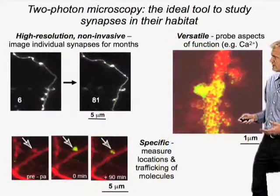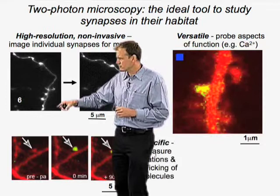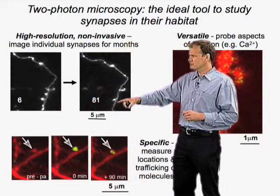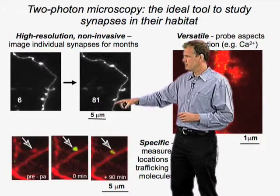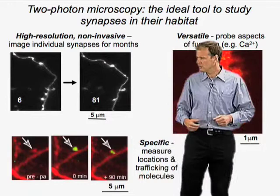This slide illustrates the kinds of things you can do when imaging in scattering tissues. Two-photon excitation microscopy has high resolution, as illustrated here, where we've imaged individual axonal terminals over almost 80 days — the time stamp is in days. We can resolve individual terminals along the axon; these terminals are only a micrometer or so in size. It's also non-invasive because we can image the same structures over months.